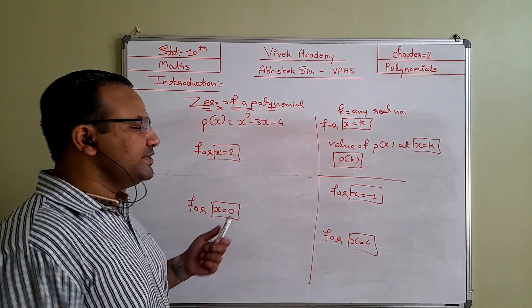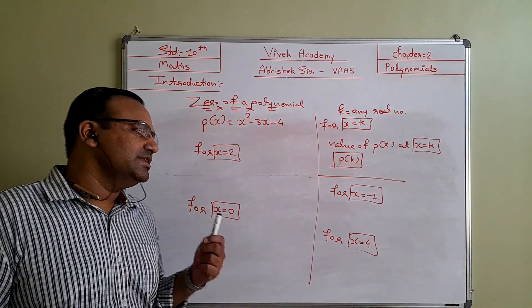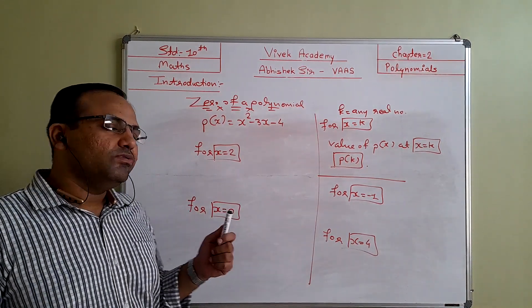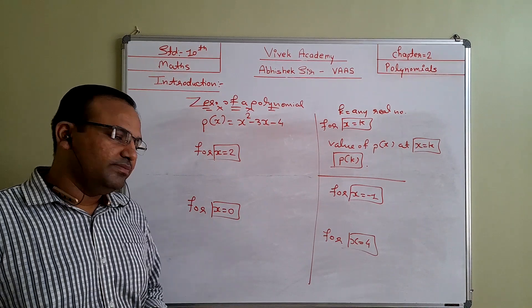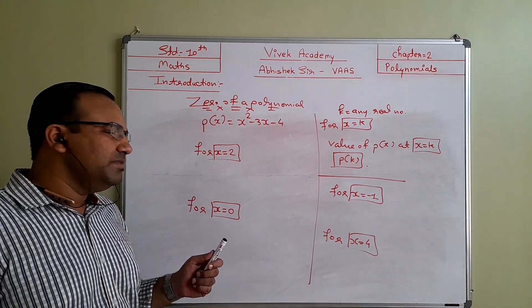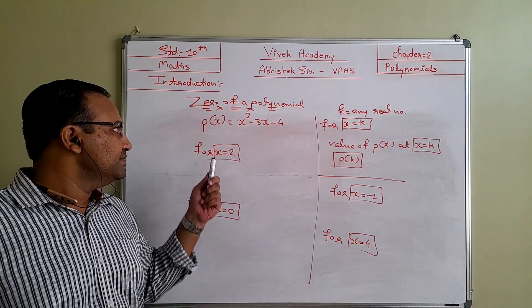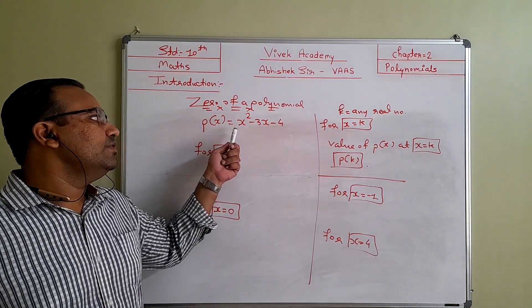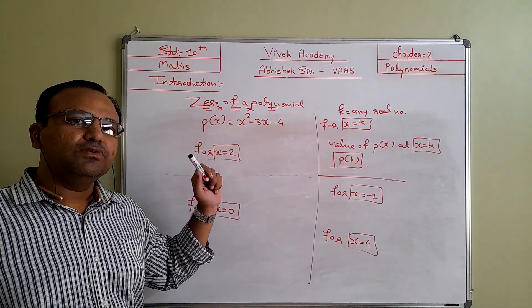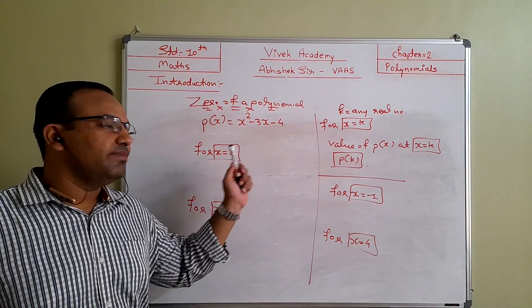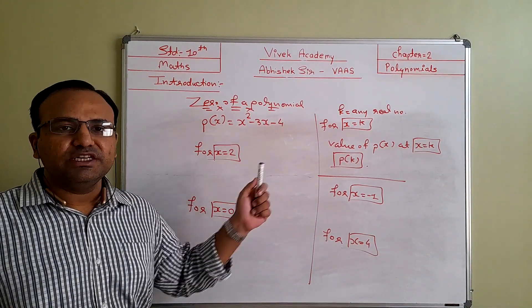The next topic discussed here is zeros of a polynomial. One of the cases discussed here is if the polynomial given to us is x squared minus 3x minus 4.